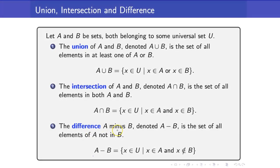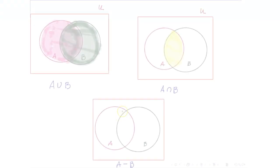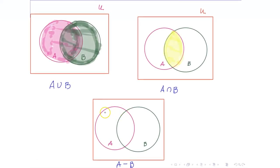And lastly, the difference A minus B is the set of all elements of A that are not in B. It will be the elements in A but are not in B. Hence, we have this region.